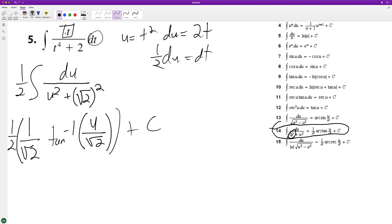So multiply those two things together. So we end up with one over two root two, arc tangent and substitute back in for u. And we get t squared over the square root of two plus C.